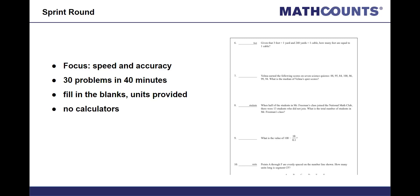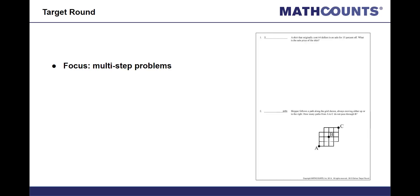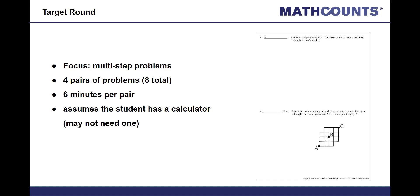The focus of the target round is solving multi-step problems. Students solve 4 pairs of problems, and they have 6 minutes per pair. If you look at the example on the right, you will see a sheet with 2 problems. Students will have 6 minutes to solve these 2 problems. At the end of 6 minutes, a proctor will collect these test papers and then pass out problems number 3 and 4, and students have another 6 minutes to complete those problems, and so on. The target round assumes that students will be using a calculator, but you may not need a calculator to solve all the problems.